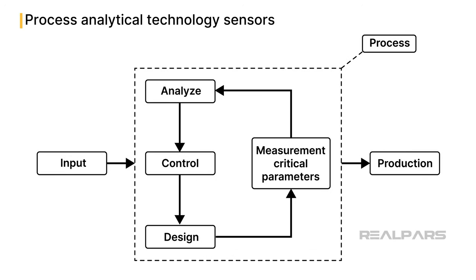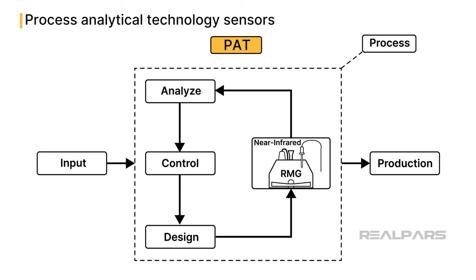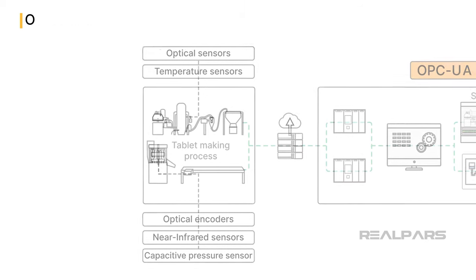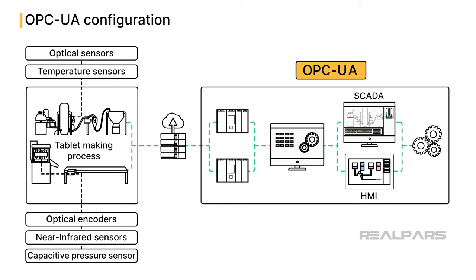Process Analytical Technology, or PAT, can be thought of as a mechanism to design, analyze, and control pharmaceutical manufacturing processes through the measurement of critical process parameters — key variables that affect the production process. An example of a PAT sensor is based on near-infrared technology, which can penetrate through solid mixtures and provide feedback on how well-mixed the solids have become. Uniformity of mixture is essential to ensure each pill has a uniform composition, and can be relied upon to deliver the right amount of medication with each dose. The sensors described each have a specific purpose in the tablet-making process.